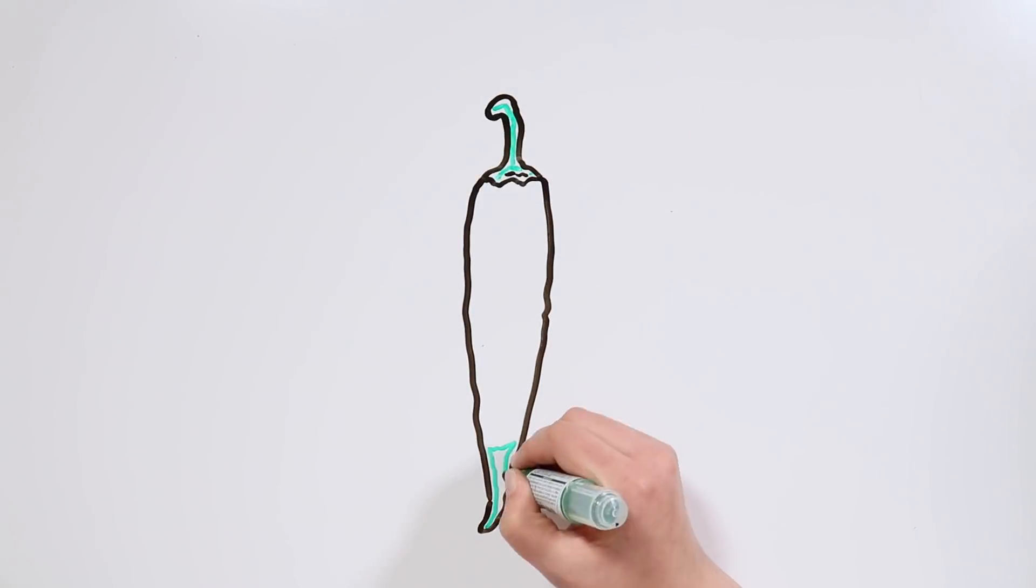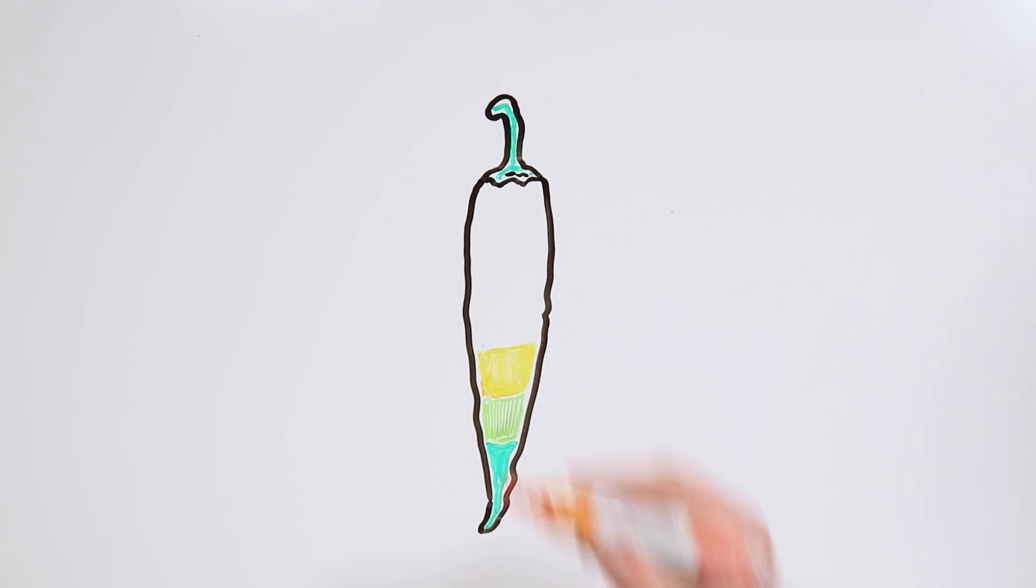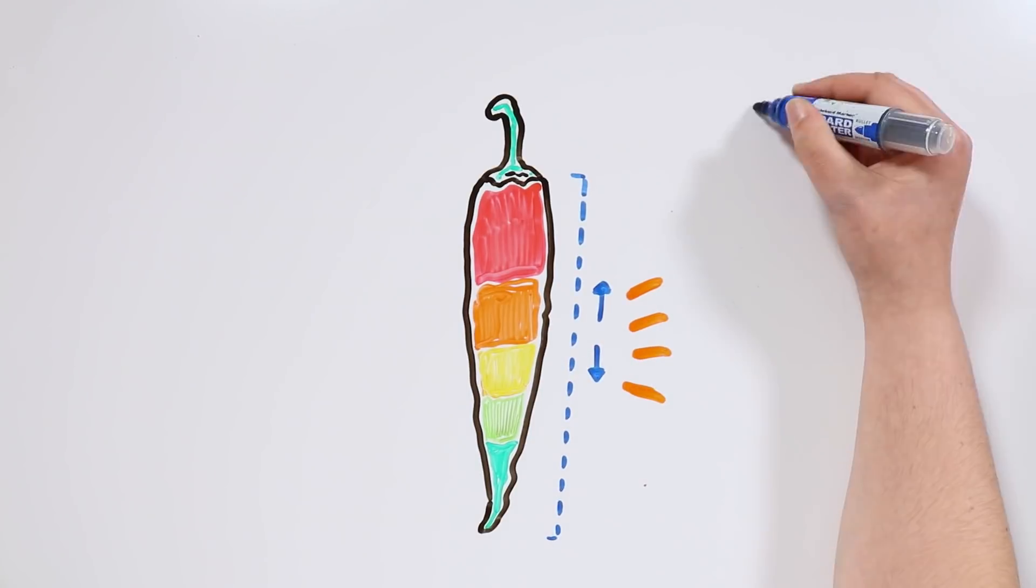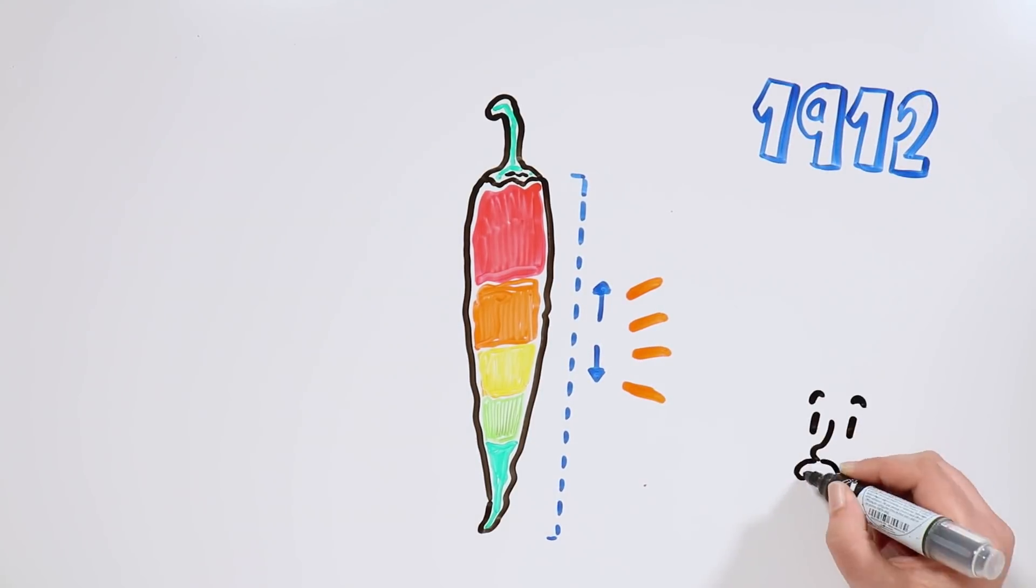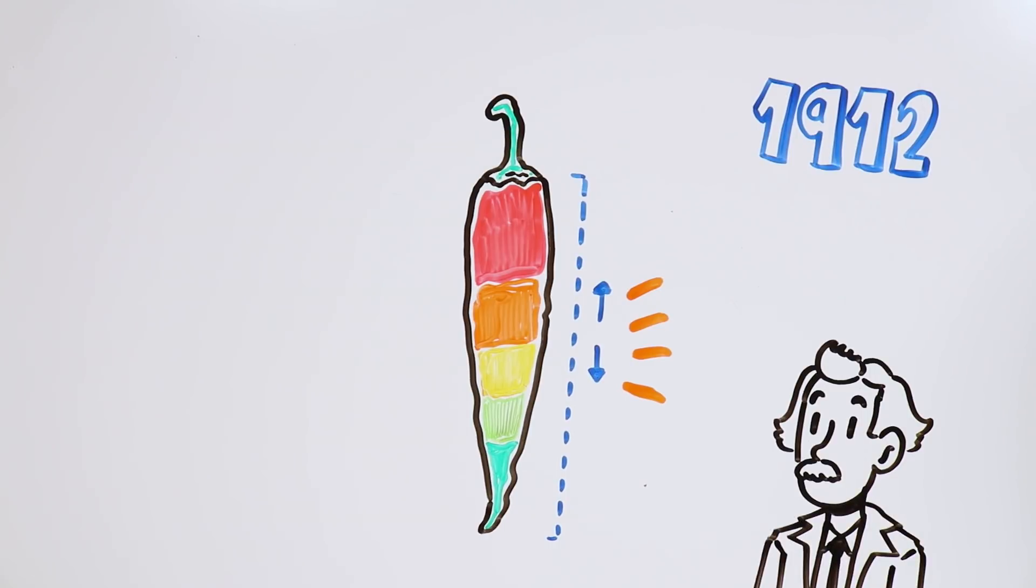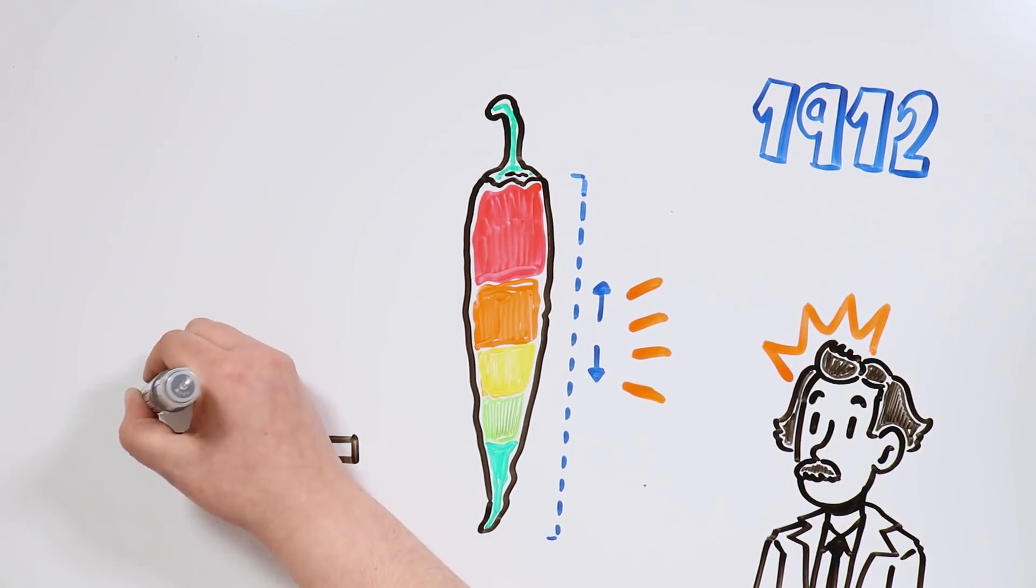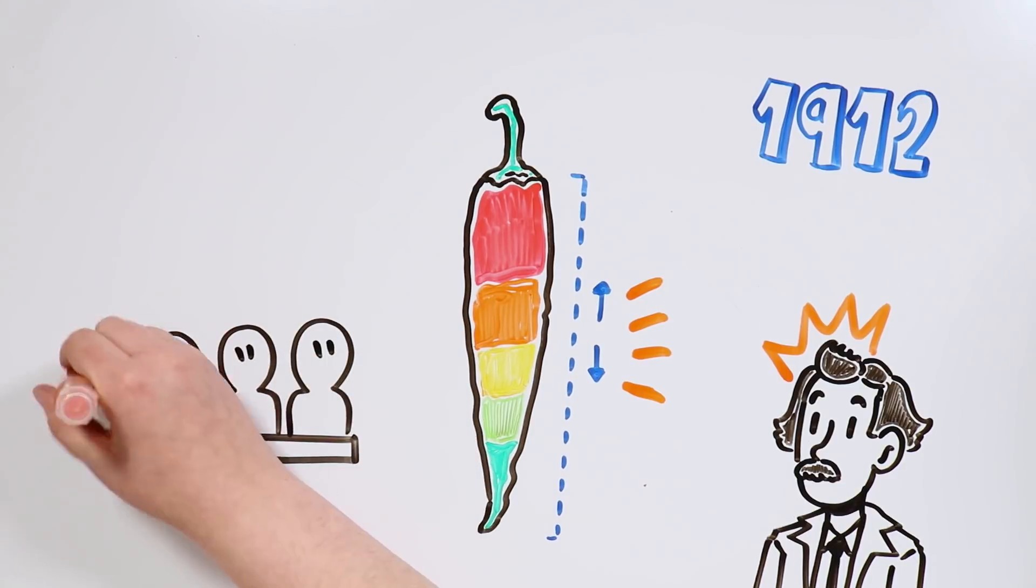The level of spiciness varies a lot between different kinds of chili peppers, and there are ways to actually measure it. The most famous scale for determining the level of capsaicin is the one designed in 1912 by the US pharmacologist Wilbur Scoville. He was able to establish the scale with the help of a jury of flavors.